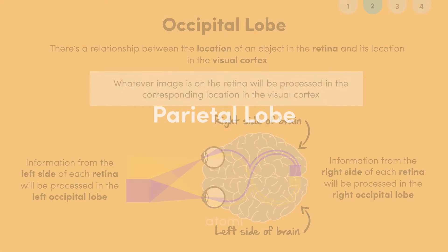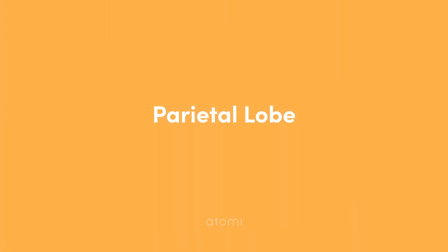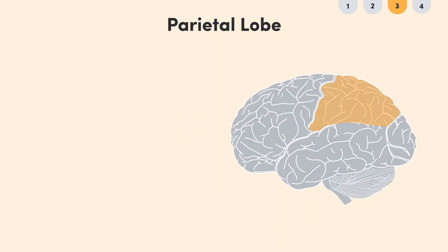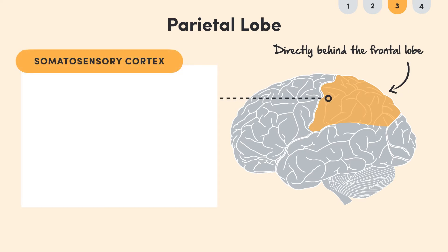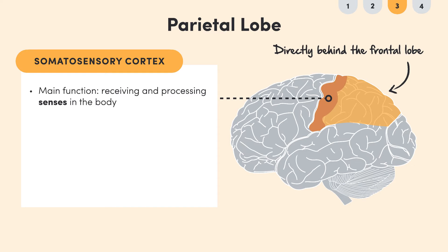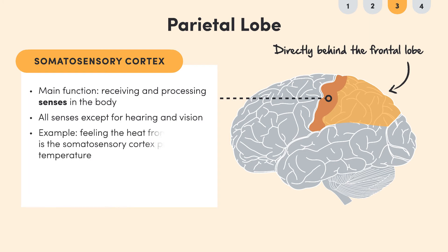Let's move on to the parietal lobe, which is located directly behind the frontal lobe. It contains the somatosensory cortex, which has the main function of receiving and processing senses in the body. This includes all senses except hearing and vision. So when you feel the heat from the sun, for example, that's your somatosensory cortex processing temperature.